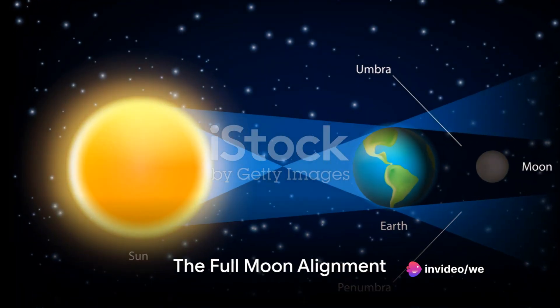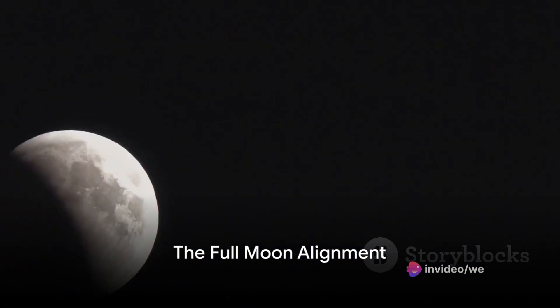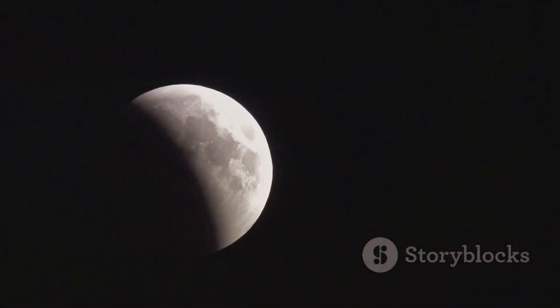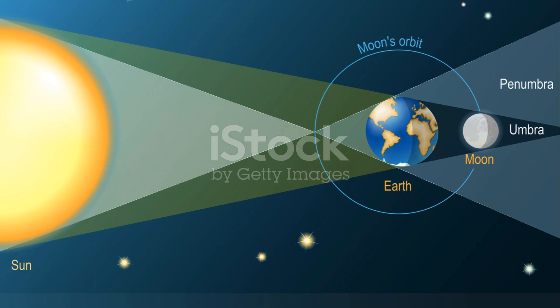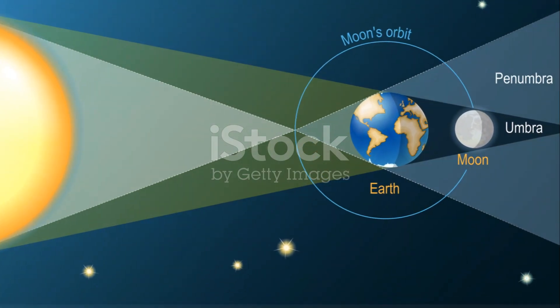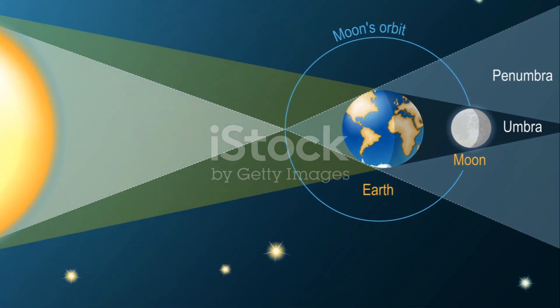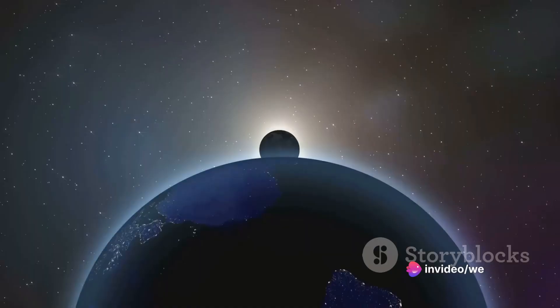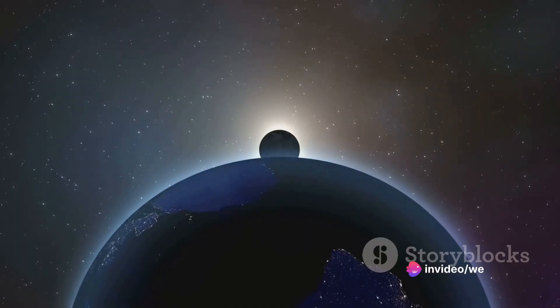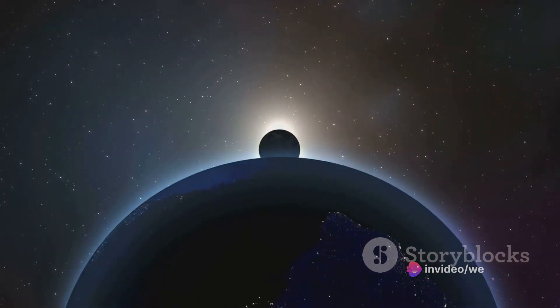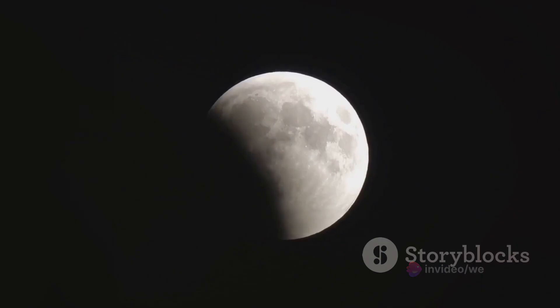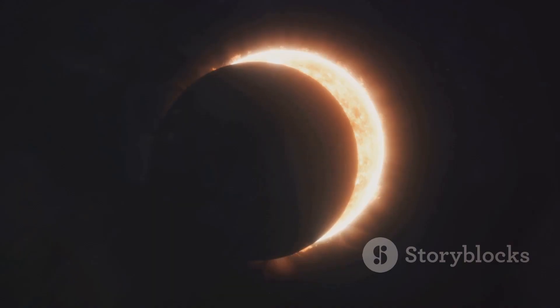The first thing to understand is that a lunar eclipse occurs only during a full moon. This is the stage when the moon is on the opposite side of the earth from the sun. Picture three celestial bodies in a straight line. At one end is the sun, emitting its brilliant light. In the middle, we have our planet, Earth.